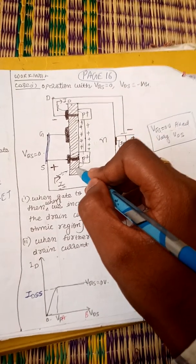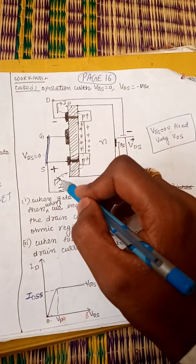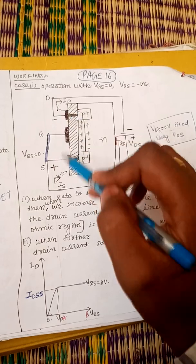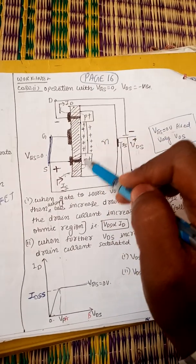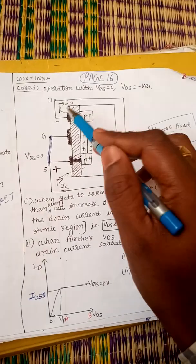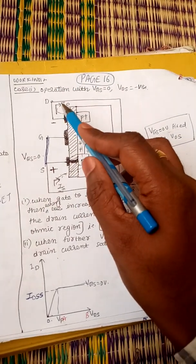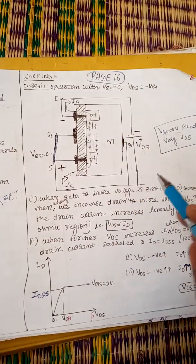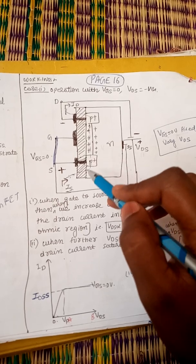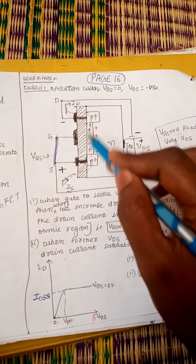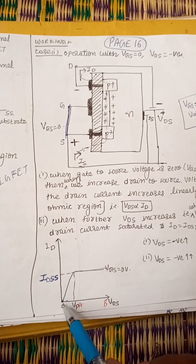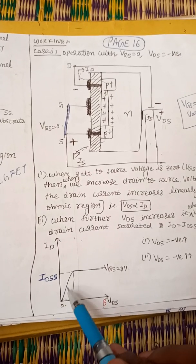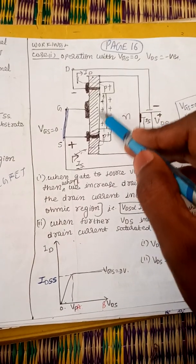The direction of drain current and source current is marked in the direction of hole movement. Since the holes are moving upward, the arrow mark should be upward. Initially, holes move from source to drain — there is a path for hole movement and it follows Ohm's law. From 0 to point A, the device follows Ohm's law.